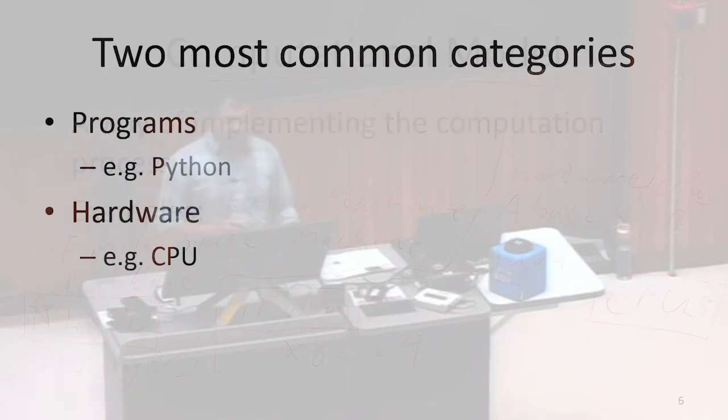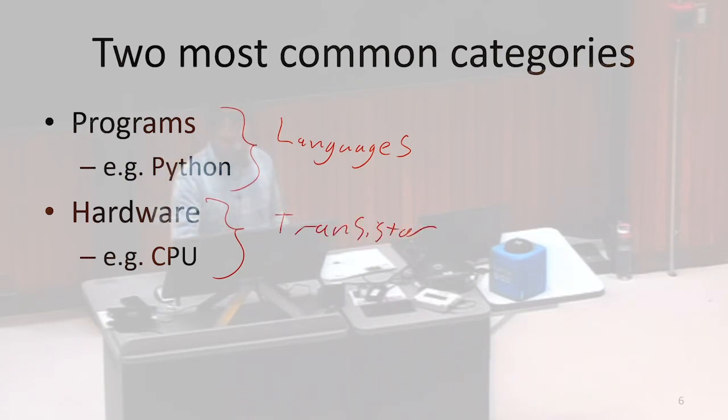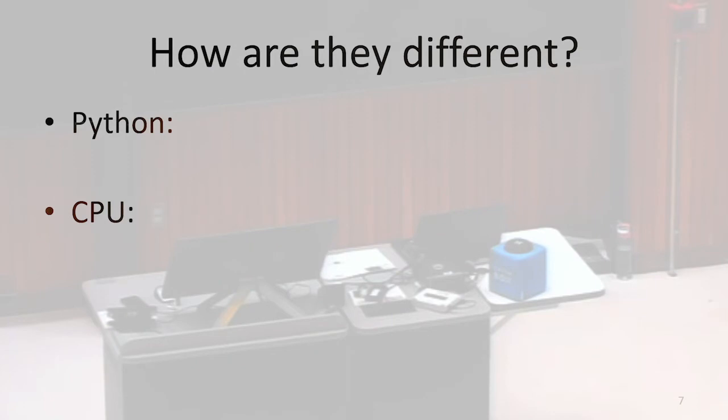Typically when we look at our categories of models of computation, I personally like to break them into two categories. So we have programs or languages, like Python. And we also have hardware as another way that we could define our model of computation. And this is like CPUs or transistors, electricity, that sort of thing. It turns out that they're going to in some sense be equivalent to one another. They are just two different ways of writing down the same computations. We're going to find that anything I can write a program for, I can define some hardware that's going to do the exact same thing and vice versa. So if they're the same, if we can do the same thing, how are they different? Why do we want both? What are some ways that Python is different from your computer hardware?